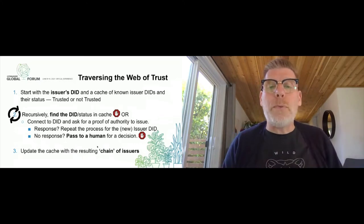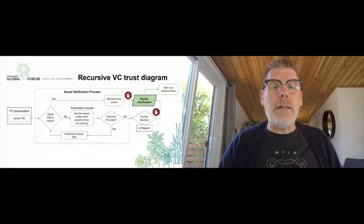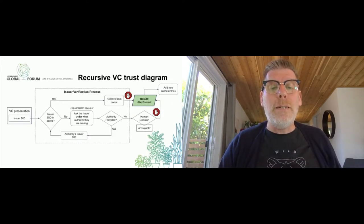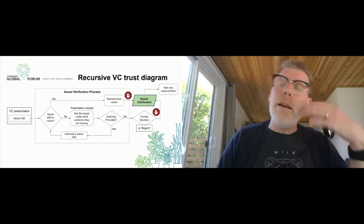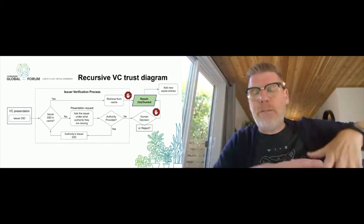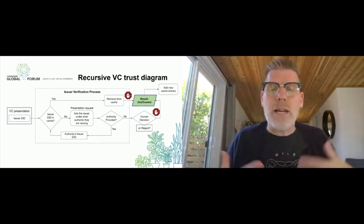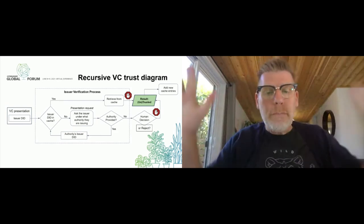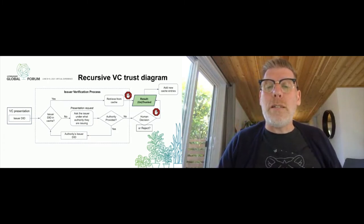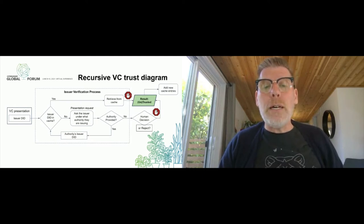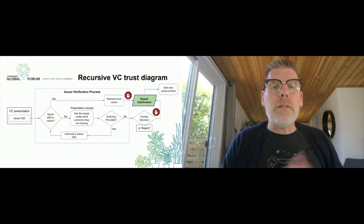Here's another representation: I start with my issuer DID, check if it's in my cache. If not, I ask the issuer: what's your authority for issuing this? If they give me one, I loop back. If they don't, I either make a human decision or just reject it outright — going back to the holder saying that credential can't be used, you need to provide something else. If it is found in the cache, the process ends with a result of trusted or untrusted, and I add any traversed entities to the cache.